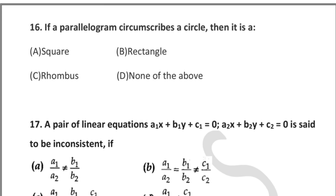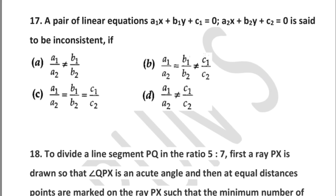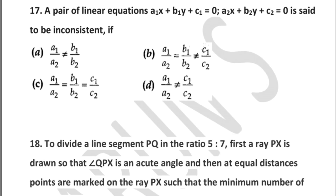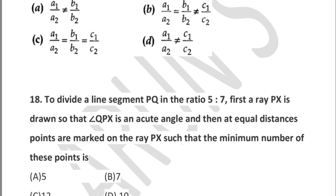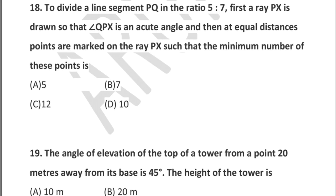Question 17: a pair of linear equations a₁x + b₁y + c₁ = 0 and a₂x + b₂y + c₂ = 0 is said to be inconsistent if — four options are provided, choose the correct answer and shade. Question 18: to divide a line segment PQ in the ratio 5:7, a ray PX is drawn so that angle QPX is an acute angle, and points are marked at equal distances on PX. The minimum number of these points is — option A: 5, option B: 7, option C: 12, option D: 10.